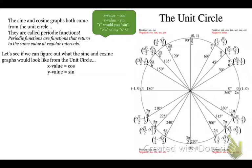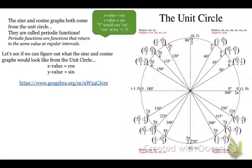So let's see if we can figure out what sine and cosine would be from the unit circle. Remember, sine is your x values and cosine is your y values. So if we looked at all the x values here, we have 1, then square root of 3 over 2, square root of 2 over 2, one half, zero, and it just continues.